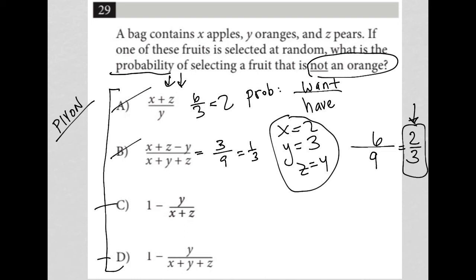And then C would be 1 minus Y over X plus Z. So Y is 3, X plus Z is 6, so that'd be 1 minus 1 half. 1 minus 1 half is just a half. So that's not 2 thirds. That's out.